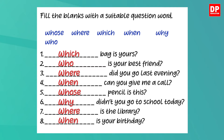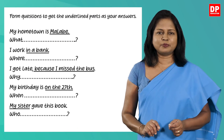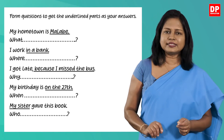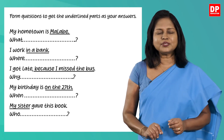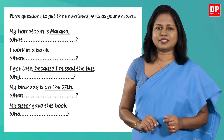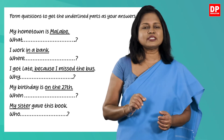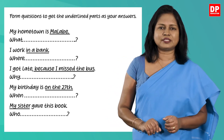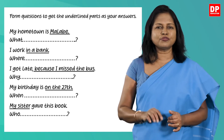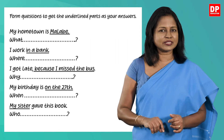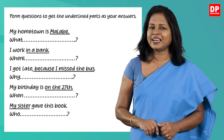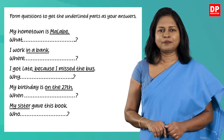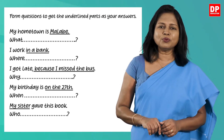Okay children, I hope you could get all the answers correct. Now let's do another activity. Here you have five statements. In each one, there is a part underlined. You have to form a question to get the underlined part as your answer. To make it easier, the question word is given and you have to complete the rest of the question. As I have taught you how to form WH questions with auxiliary verbs in my previous lesson, I'm sure you won't find it difficult. Pause the video and form the questions now.